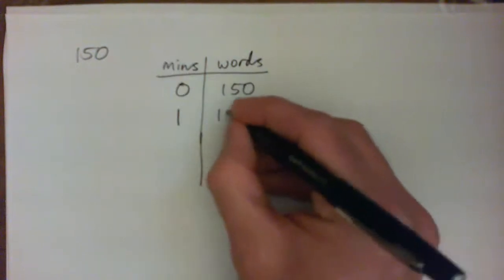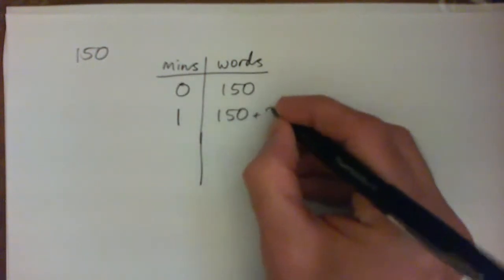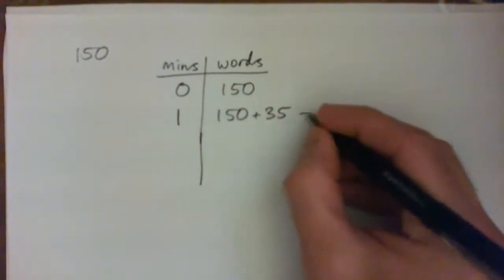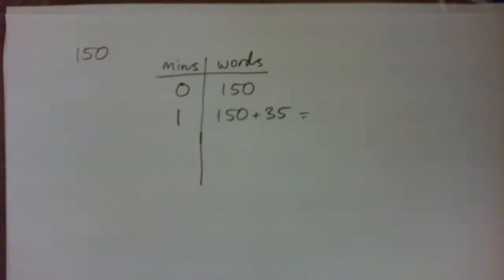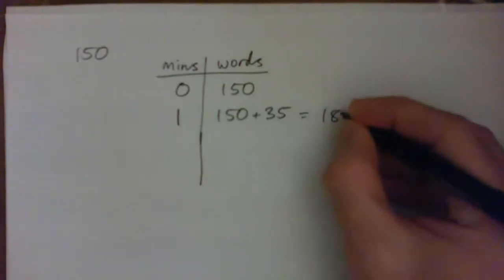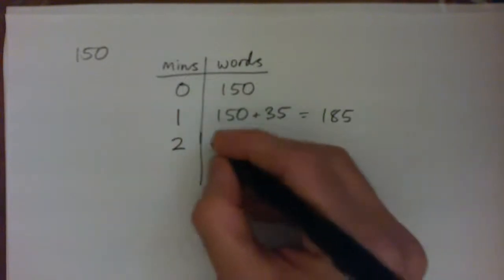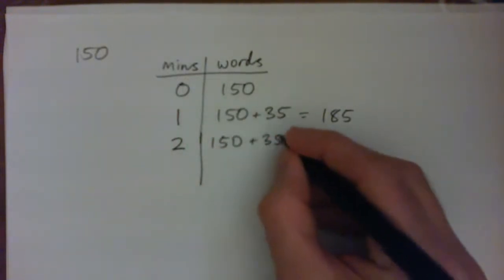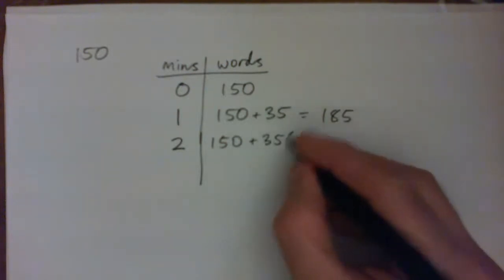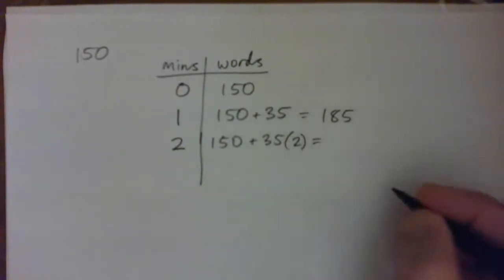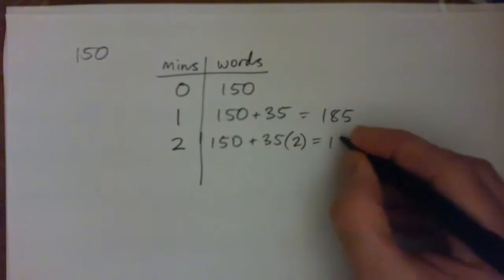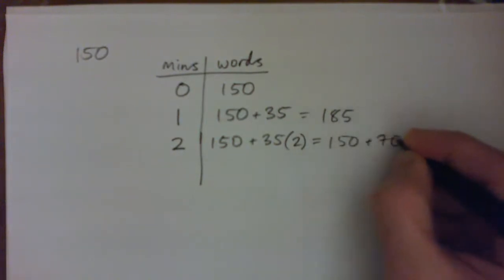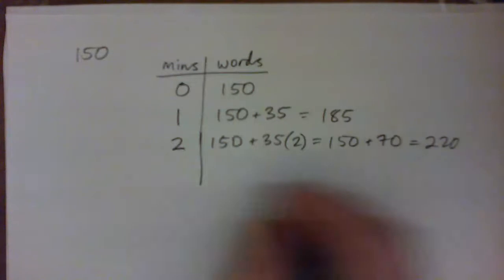Alright, after 1 minute, I got 150 plus 35. Do you all agree with that? So 185. After 2 minutes, I've got my 150 from yesterday plus 35 words per minute, so 35 times 2, right? So that would be 150 plus 70, right? Or 220, and so on.